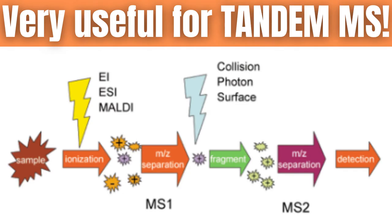This selective ejection process is especially useful in tandem mass spectrometry, since we can use this mass analyzer to easily target ions of a specific size and send them on to the next stage. If you want to learn more about tandem mass spectrometry, check out that video. Until next time!